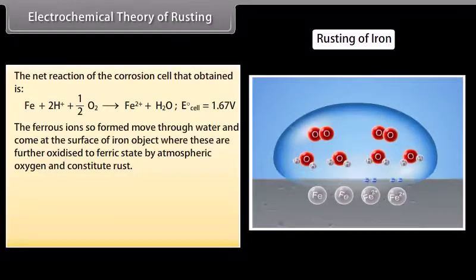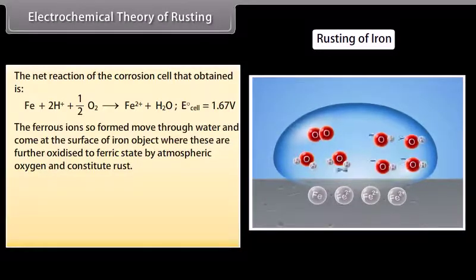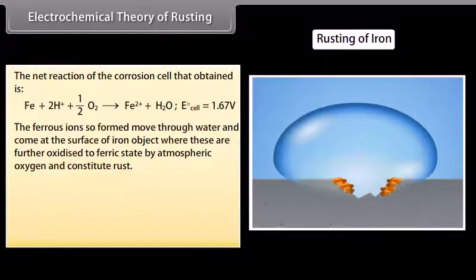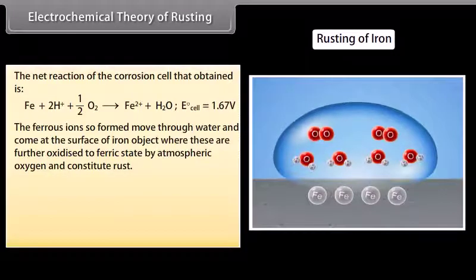The ferrous ions so formed move through water and come at the surface of iron object where these are further oxidized to ferric state by atmospheric oxygen and constitute rust.